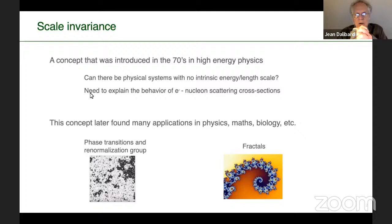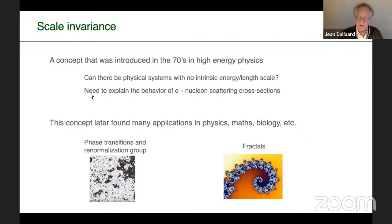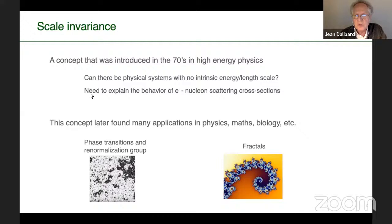Scale invariance, in general, encompasses many topics, not only in physics. It was introduced in physics in the 1970s, coming from high energy physics. At that time, scattering cross sections between electrons and nuclei seemed to be energy independent, and the question arose whether there could be physical systems with no intrinsic energy scale. That is how scale invariance emerged in physics, and then the concept was applied in many branches — phase transitions, critical exponents, mathematics, and even biology.